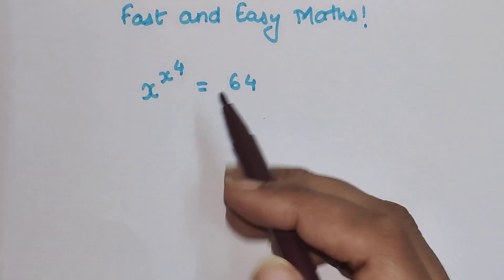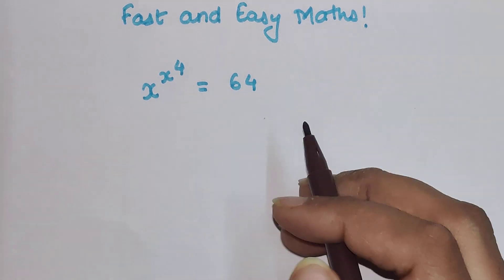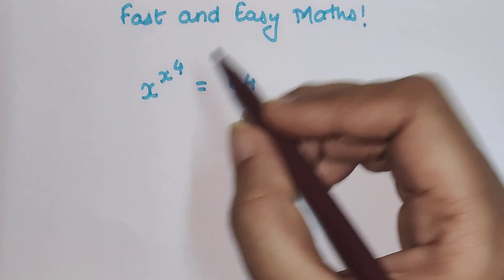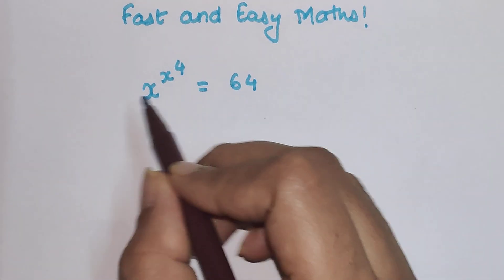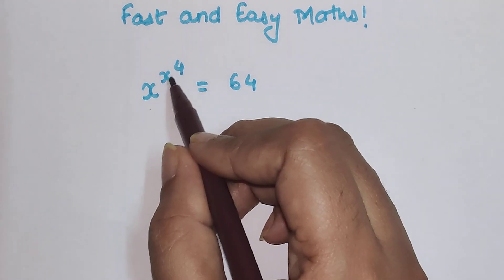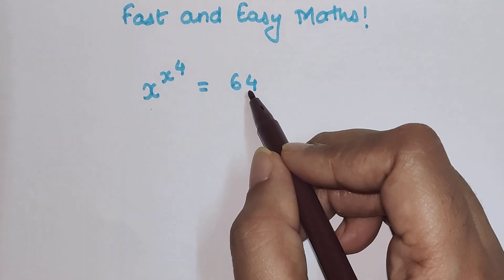So students, I'm going to solve a question which maximum students got wrong. The reason for that was when they had this kind of question which read as x^(x^4) = 64.